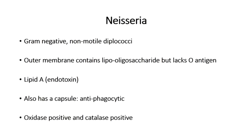In terms of Neisseria in general, they have an outer membrane that contains lipooligosaccharide. This contains endotoxin in the form of Lipid A, and it carries out a number of the inflammatory functions of the bacteria, leading to petechiae and hemorrhage. It's worth noting that, unlike other gram-negatives, Neisseria lack an O-antigen in their outer membrane.